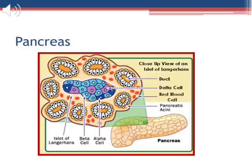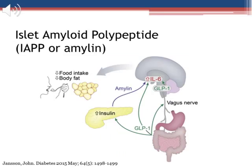Islets constitute only about 2% of the pancreas. Islets of Langerhans contain alpha cells — about 20% of the islets — that secrete glucagon, and beta cells — about 75% of the islets — that secrete insulin. Beta cells also secrete islet amyloid polypeptide, IAPP or amylin, a regulatory peptide that inhibits insulin and glucagon secretion. It has binding sites in the brain, possibly contributing to hunger regulation and inhibiting gastric emptying. This is not to be confused with GLP-1, which is secreted from the gut and can increase insulin secretion from beta cells. Both amylin and GLP-1 are released after meals and can improve glucose metabolism, decrease food intake and body weight via effects on the brain, while GLP-1 also acts on the vagus nerve.